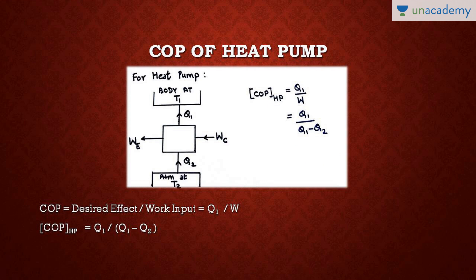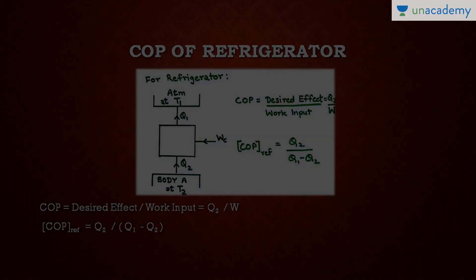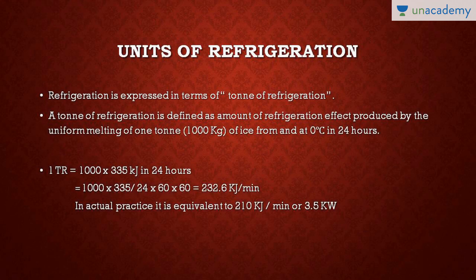So the coefficient of performance of a refrigerator is Q2 upon W, and the coefficient of performance of a heat pump is Q1 upon W. Just keep in mind: desired effect upon work input. In heat pump, COP is Q1 upon W; in refrigerator, COP is Q2 upon W.